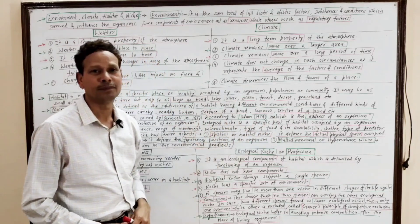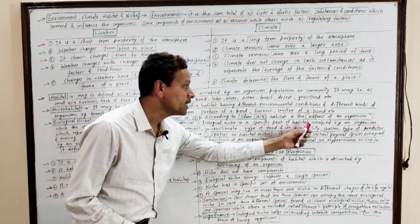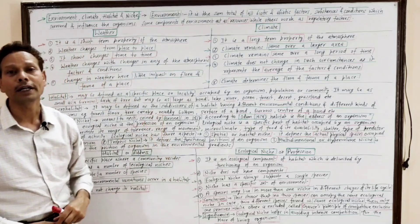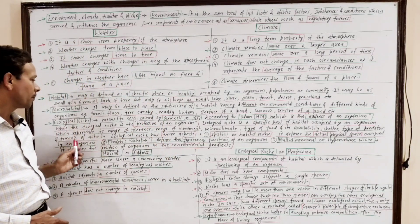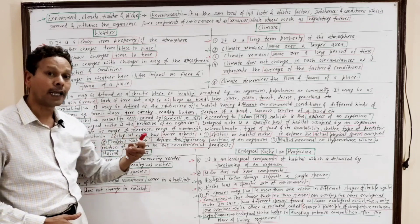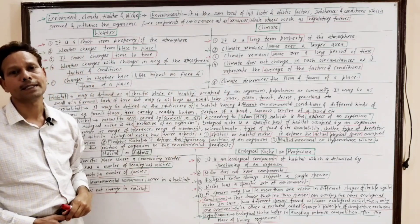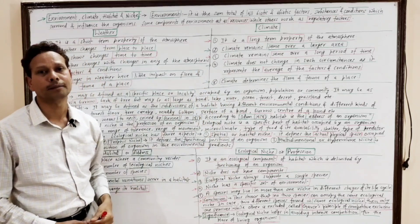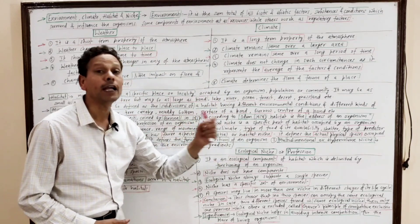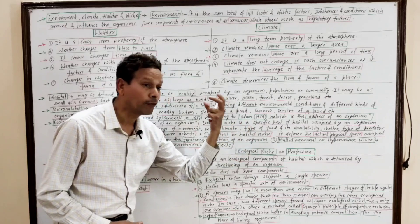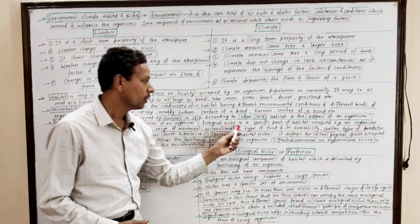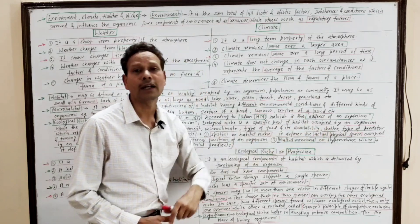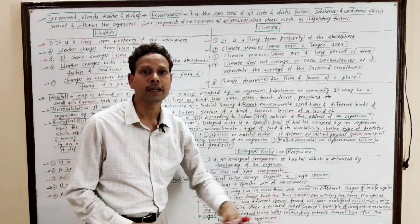Ecological niche is the specific part of habitat occupied by an organism, which represents the range of tolerance, the range of movements of the organism, the microclimate, and also the type and availability of food, shelter, type of predators, etc.